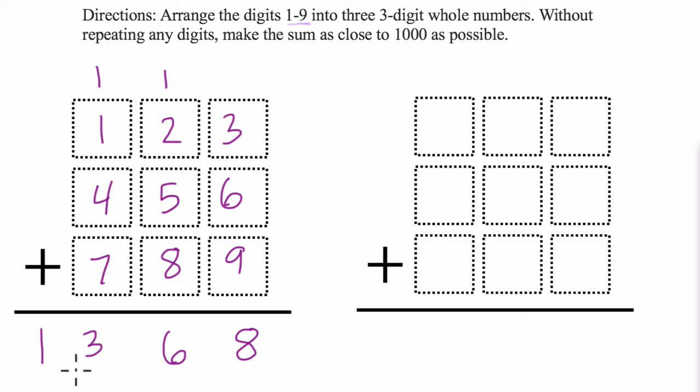So we've got 1,368. So this number is 368 away from 1,000. So you can now investigate this problem, try it out on your own, see how close you can get, and then resume the video, and we'll talk about some strategies together.